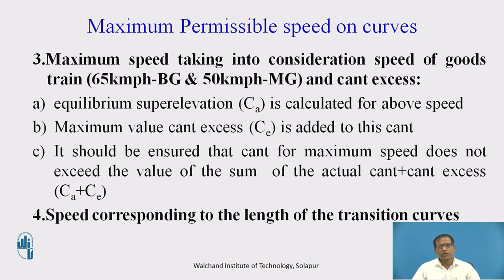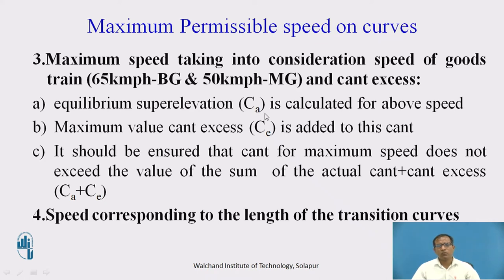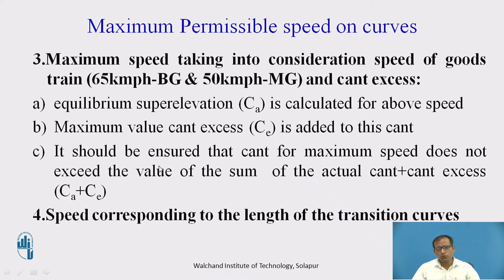The third consideration is for vehicles moving at lesser speed than the equilibrium speed, such as goods trains traveling at 65 kmph for BG and 50 kmph for meter gauge. We calculate the equilibrium cant for the given goods speed, then add the cant excess to CA, and calculate the maximum speed also considering goods vehicles and lower-speed vehicles while defining the permissible speed.